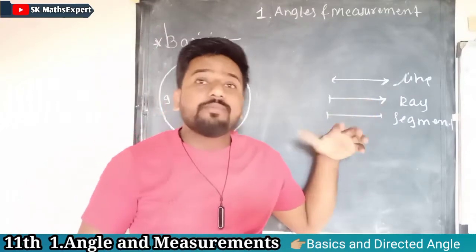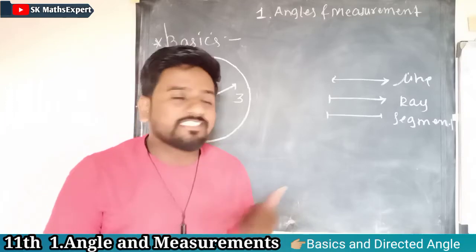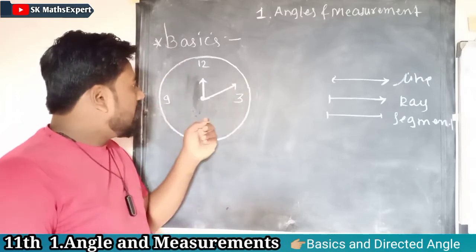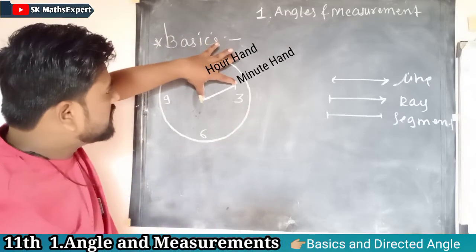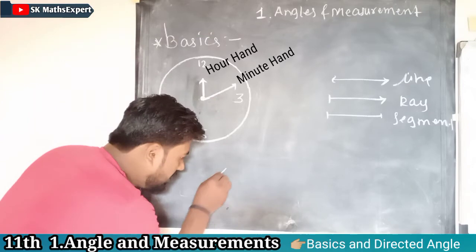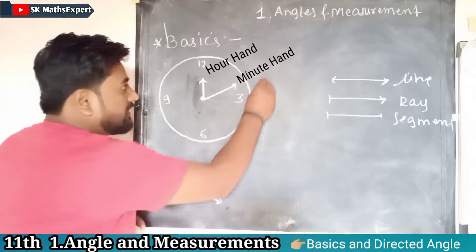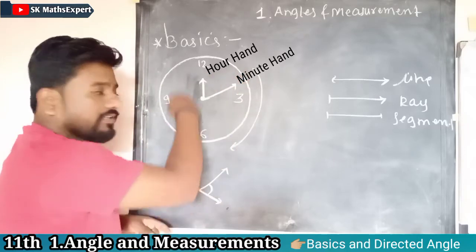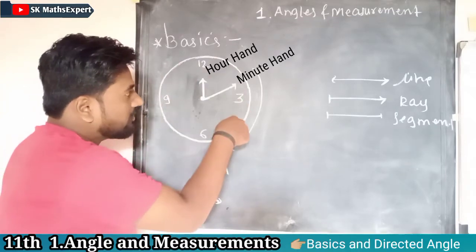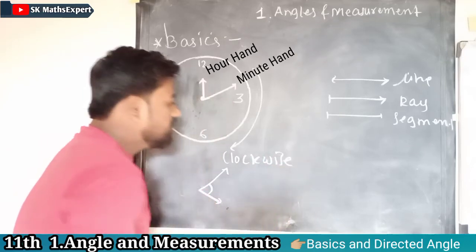You have already seen these in previous classes. These are very important structures for this chapter. Now let's see one more concept. Suppose this is a clock. It has three hands — minute hand, second hand, and hour hand. After rotation, it makes some angle between the minute and hour hands. The rotation of these hands is in this way — this type of rotation is called clockwise direction.